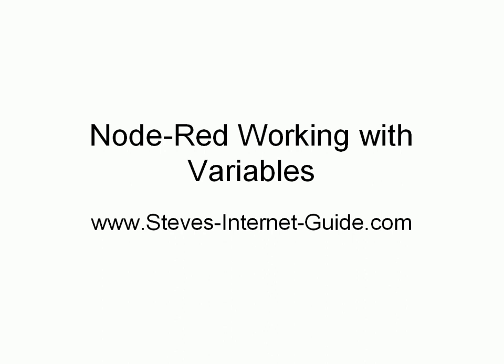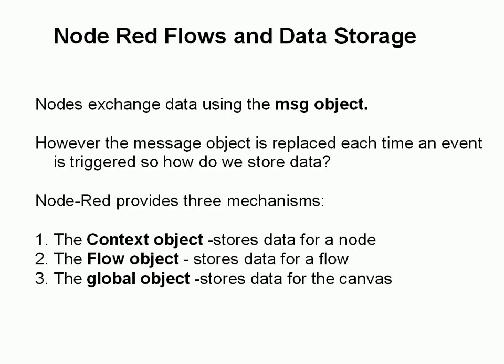In this video I want to talk about working with Node-RED variables. In an earlier video we talked about the message object and we saw how it was used to pass information between nodes. The problem with the message object is that each time an event takes place you get a new message object and the old message object gets replaced. So how do we store data in Node-RED?